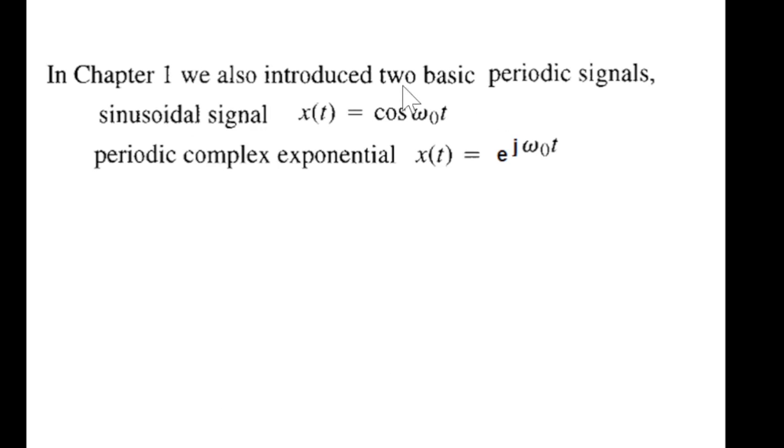Just to recall, in chapter one we introduced two basic periodic signals. One is called the sinusoidal signal represented by x(t) equals cosine omega t, and the other is periodic complex exponential signal x(t) which is represented by e raised to the power j omega naught.